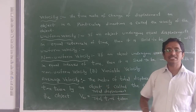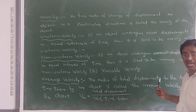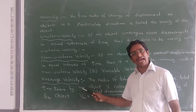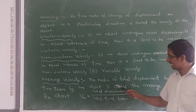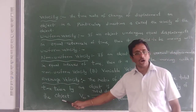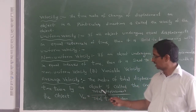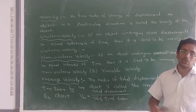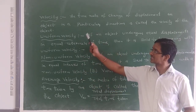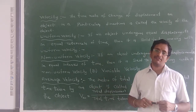Average Velocity: The ratio of total displacement to the total time taken by an object is called the average velocity of the object. Therefore, average velocity equals total displacement divided by total time. We have now discussed velocity, uniform velocity, non-uniform velocity, and average velocity.